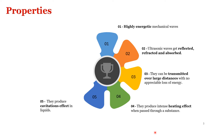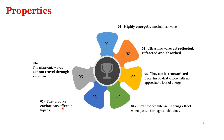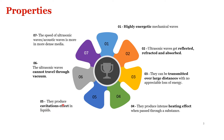Ultrasonic sound waves produce an intense heating effect when passed through substances like liquid. Whenever ultrasonic sound waves are transmitted through a liquid, they produce a cavitation effect in the liquid. Another important property is that ultrasonic sound waves cannot travel through vacuum — they require a medium for propagation. The speed of ultrasonic sound waves depends upon the medium through which it is traveling; if the medium is more dense, the speed will be higher.